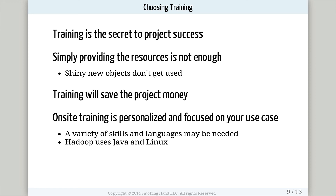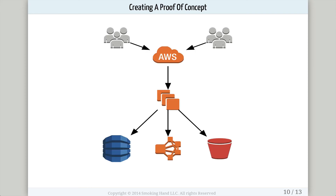On-site training is personalized and focused on your big data solution. There are a variety of skills and languages that your team will need — for example, Hadoop uses Java and Linux. A company with an extensive Windows background will need different training than one that already uses Linux or has Java skills. Now that you've been trained, you can create a proof of concept. I recommend using the cloud to create this proof of concept. You could use it for demos, or as the work progresses, bring production workload in. Using the cloud, you can scale up or scale down your cluster to meet your usage needs.